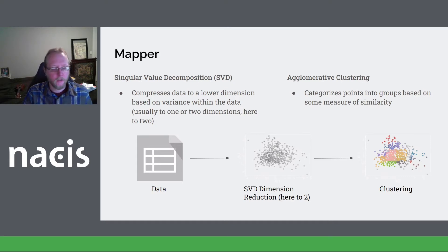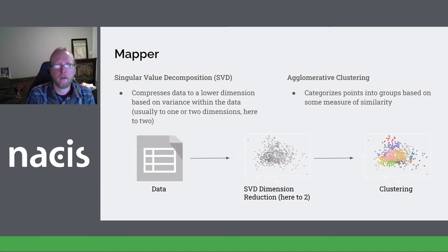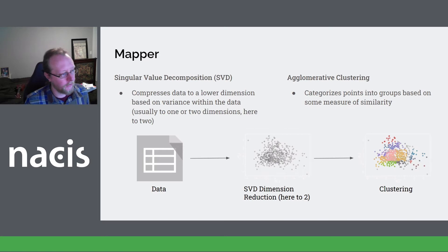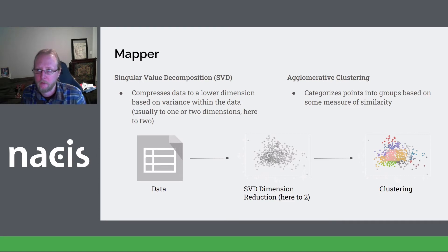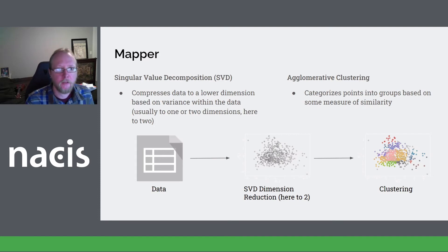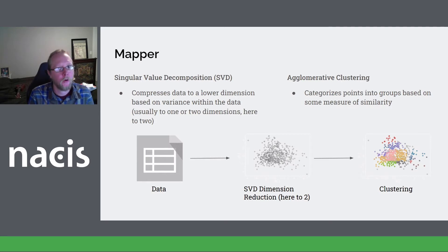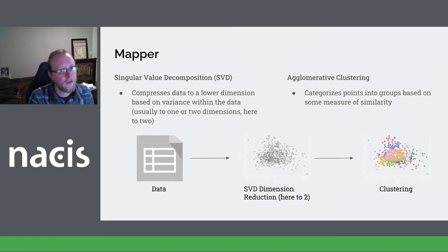If you think of your data set as a point cloud in n-dimensional space, where n is the number of variables that you have, SVD is trying to create two vectors that, when the data set is projected along them, account for the most variance. For those more familiar with Mapper, there's actually a bit more going on behind the scenes — theoretically you could use something other than SVD as the filter function. Before the clustering, Mapper draws a series of cover images that segment out the data points such that each data point belongs to at least one and potentially more cover images, and then it clusters based on those cover images.